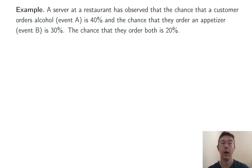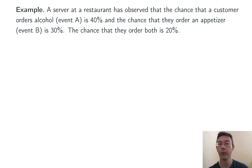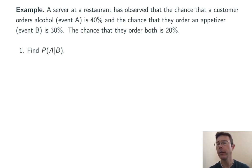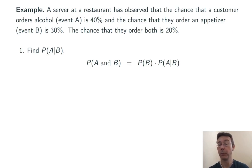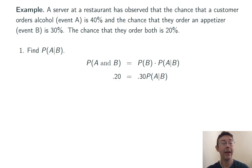Here's another example. A server at a restaurant has observed that the chance a customer orders alcohol — event A — is 40%, and the chance they order an appetizer — event B — is 30%. The chance they order both alcohol and an appetizer is 20%. Let's find the probability of A given B: if we know they've ordered an appetizer, what's the probability they also order alcohol? Using the multiplication rule, P(A and B) is 20% and P(B) is 30%, so dividing both sides gives us P(A|B) equals two-thirds.